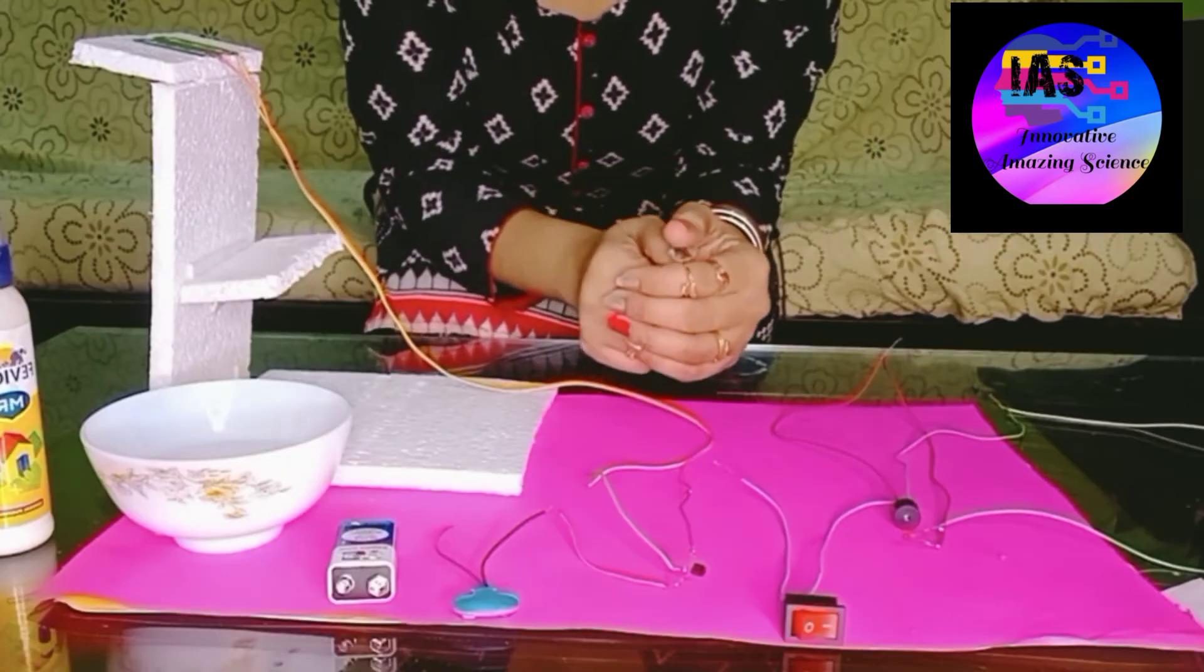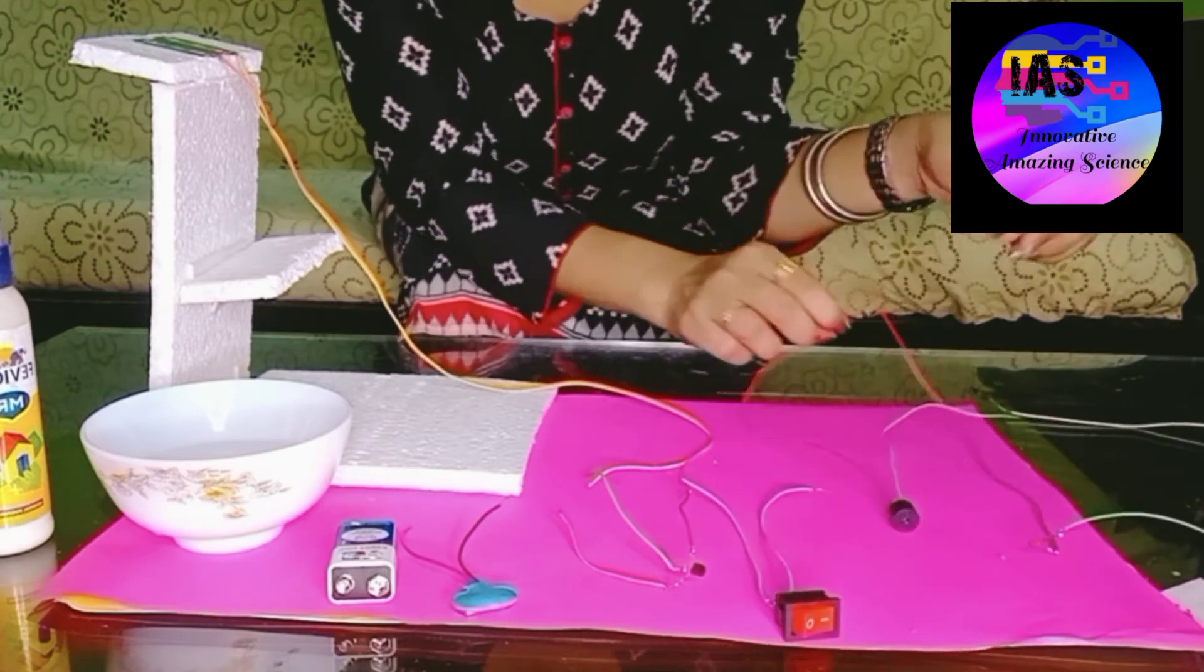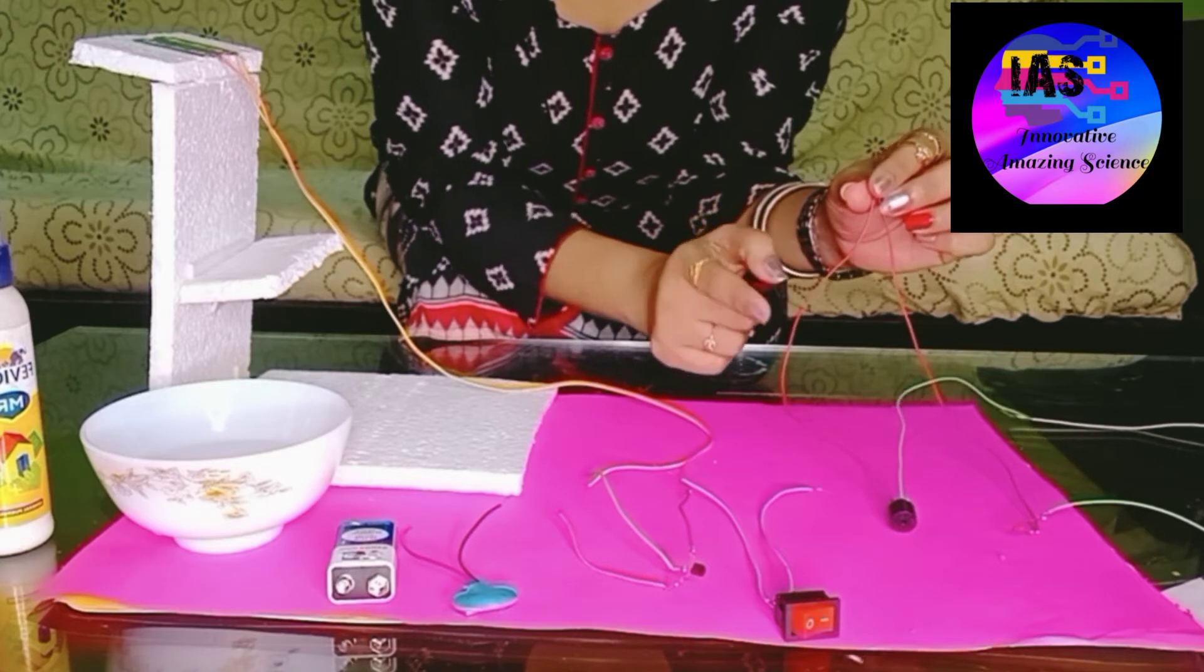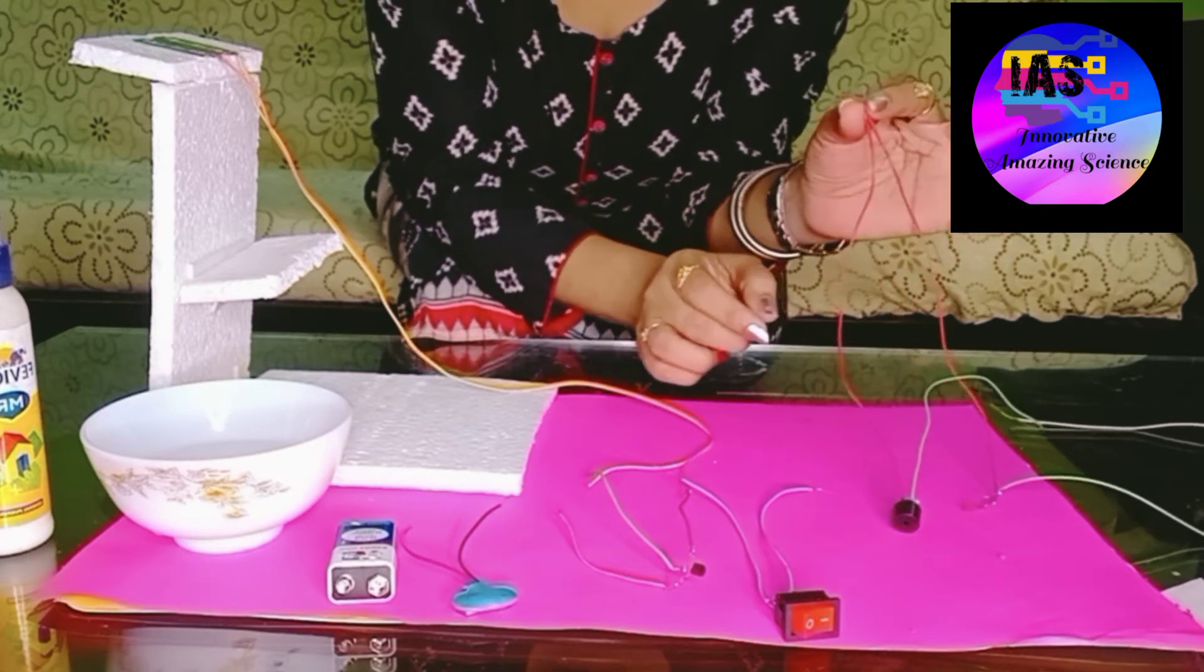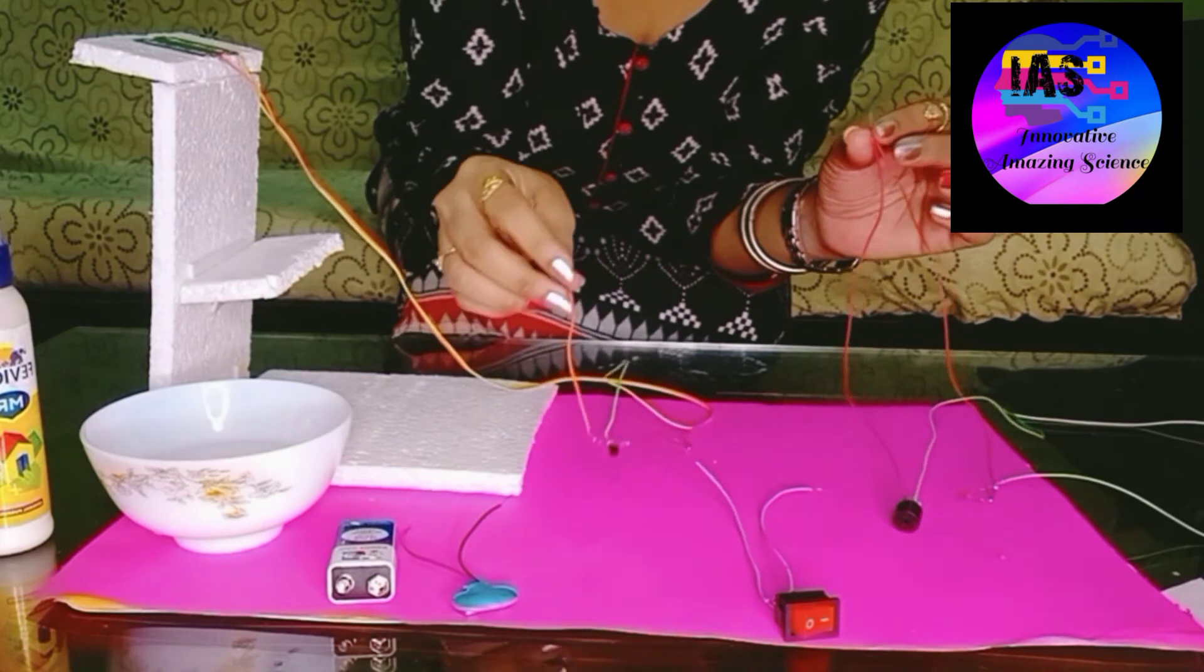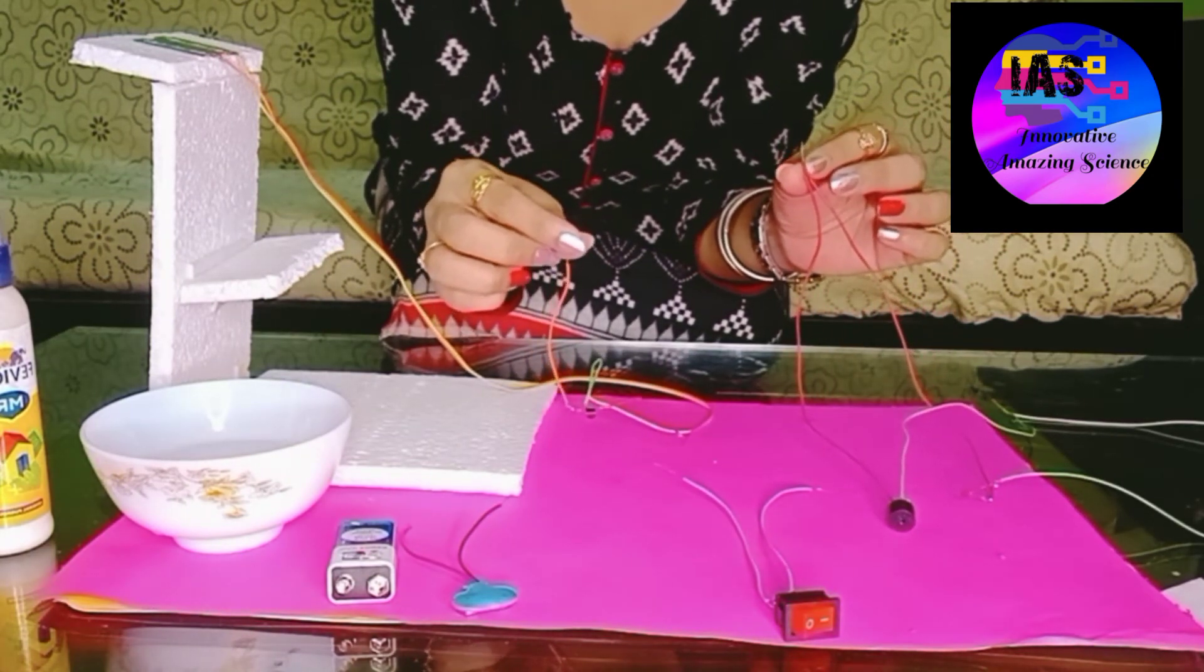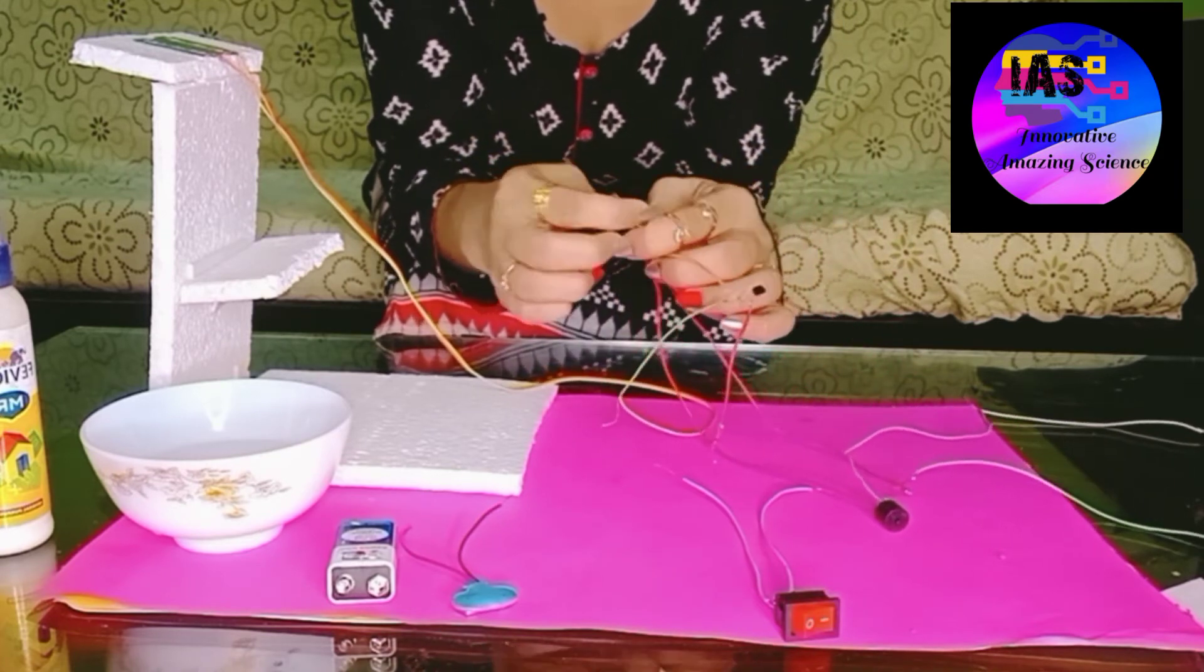Now we are just going to fix - if you observe carefully, this red portion. This is the positive end of the buzzer and the LED. I'm going to take this as a whole, and this is the end of the transistor, this is the collector, and I'm going to fix it and twist it.